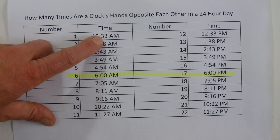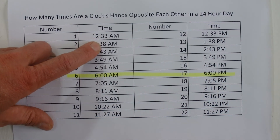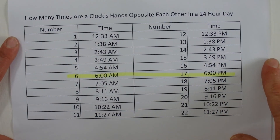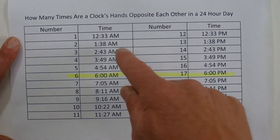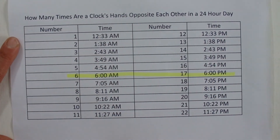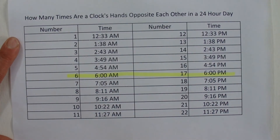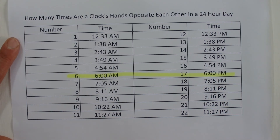I said it's approximately 65 or 66 minutes, and to be exact, it's actually 65 minutes and 27 seconds that the time is advancing between the clock's hands being opposite each other. And down in the description section I'll put the calculations for how to work out 65 minutes and 27 seconds.